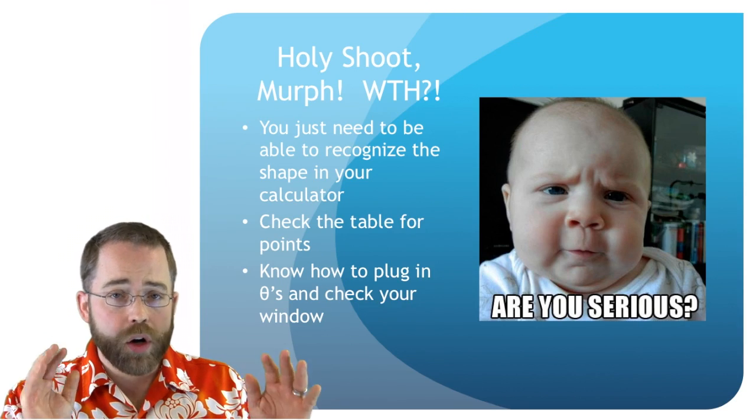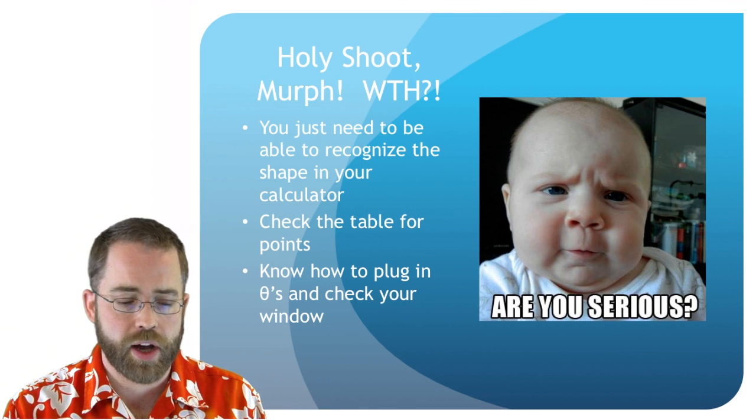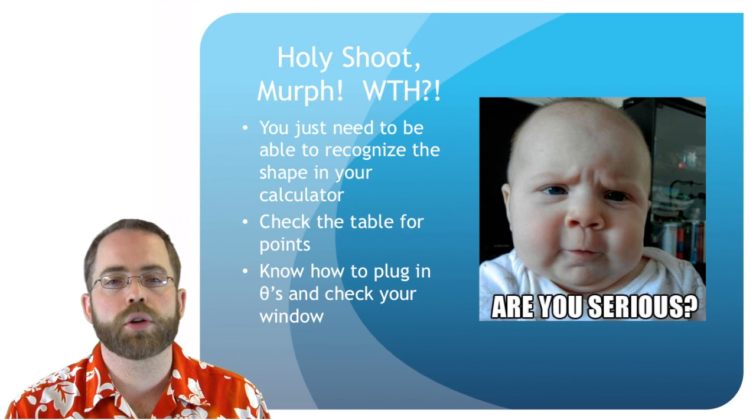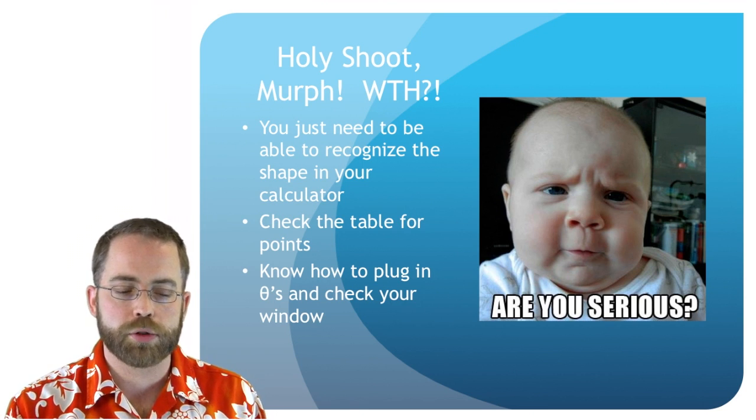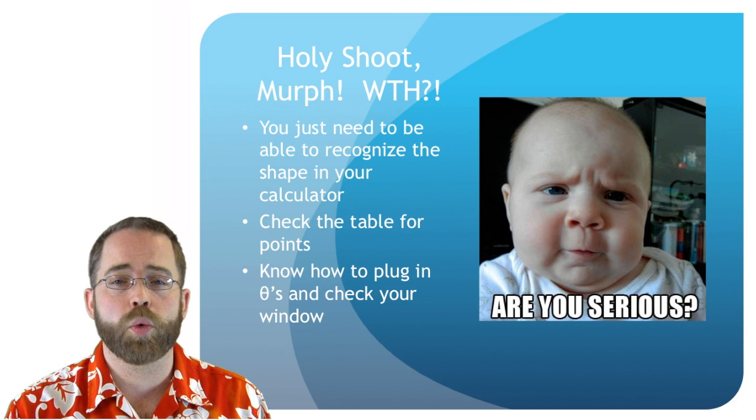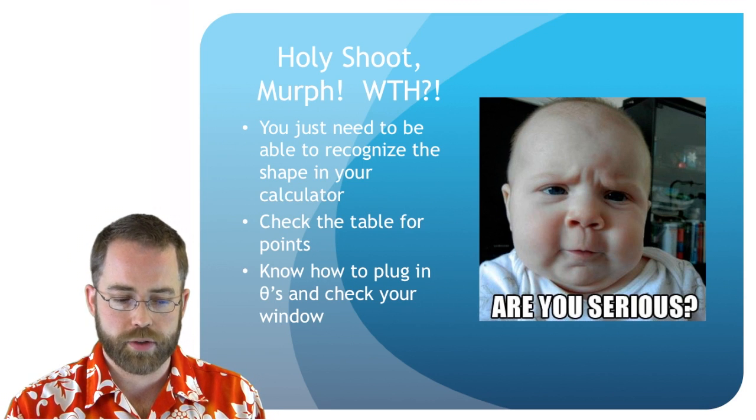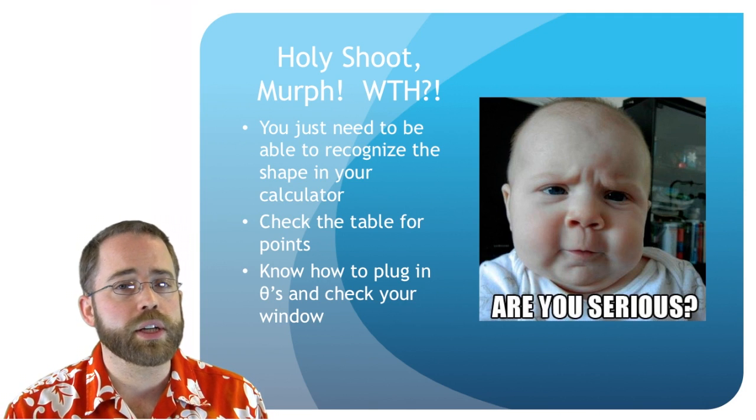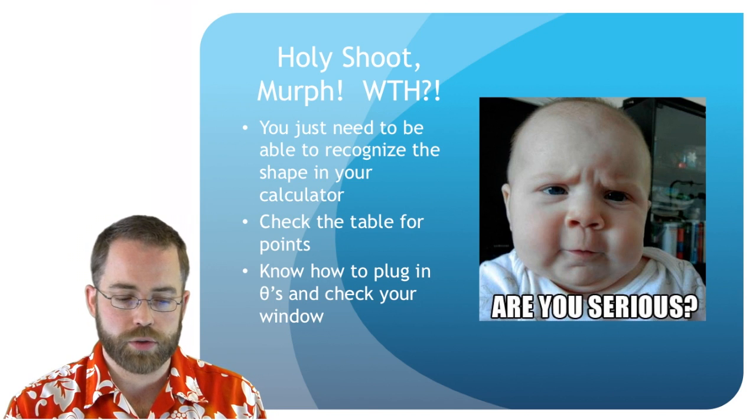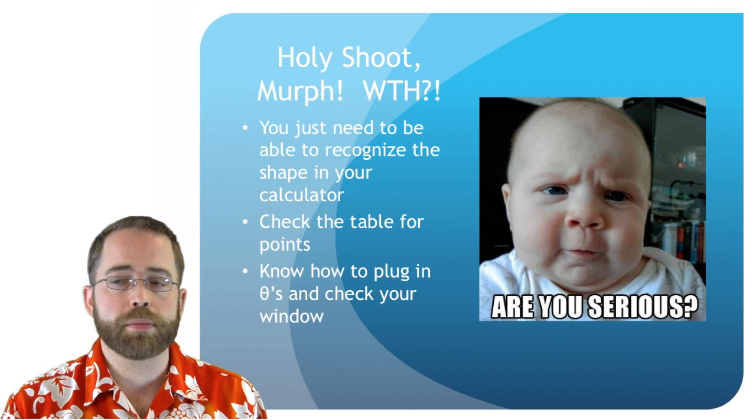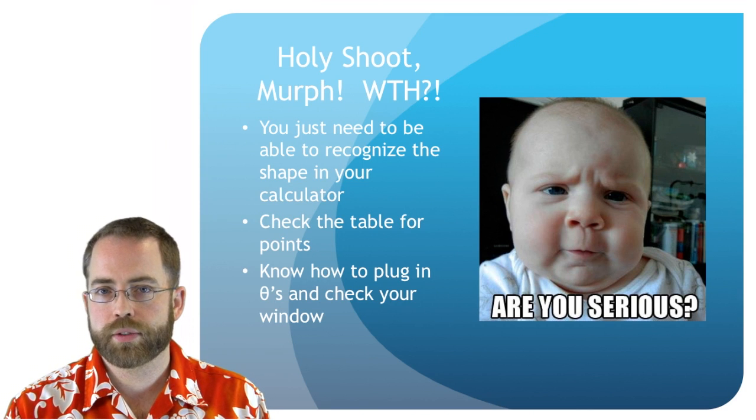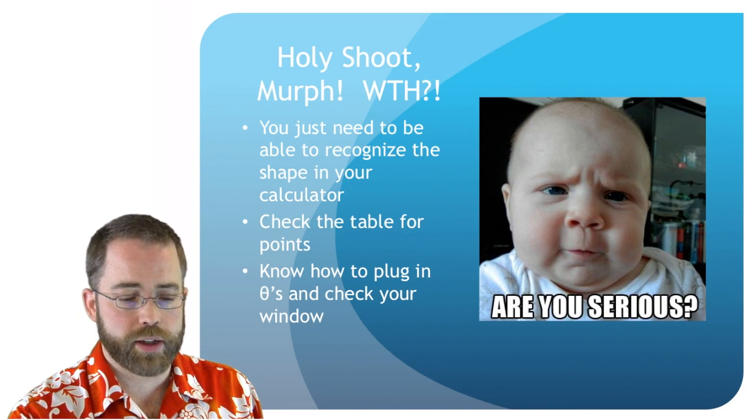And then now is the point where you're like, whoa, that was way too many shapes, Murph. If I'm overwhelmed, do not go hog wild on this. You don't have to go super crazy. You just need to be able to recognize the shapes in your calculator or in the case of certain lines, you need to be able to know what to do with theta equals three pi over two kind of stuff. You can put it in your calculator. You get to have your calculator on the test. And the calculator, if you look at the table, will get you particular values out of it. So you need to know how to be able to use your calculator to make the graph and to get particular points on the graph. So we'll be sure to practice that in class.